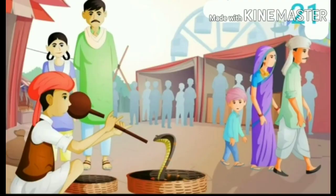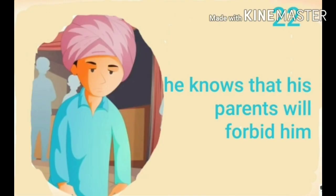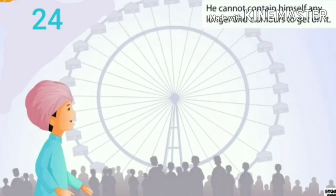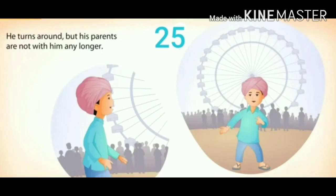Next he finds a snake charmer playing his flute, with a snake coiling itself in a basket, raising its head slowly. The child wants to hear the music but knows his parents will forbid him — forbid means will not allow. Finally he reaches the giant wheel, and his eyes shine at it, with its brightly colored lights and people laughing and shouting. He cannot contain himself and slowly says, 'I want to go on the roundabout.' As soon as he turns around to look at his parents for permission, he finds they are not with him any longer. This is the end of part 1.